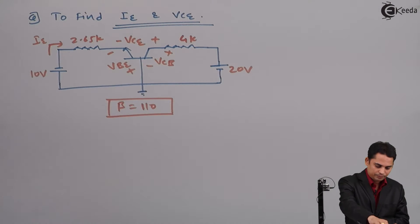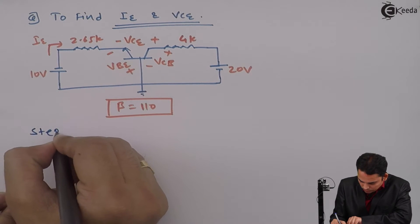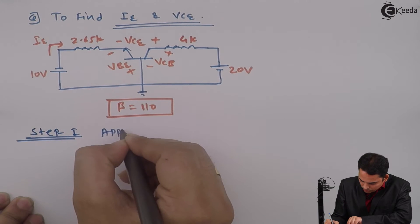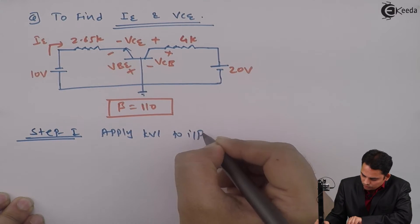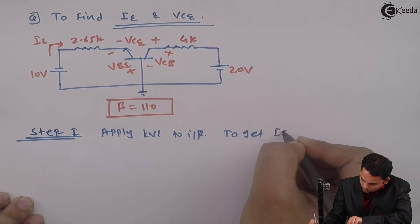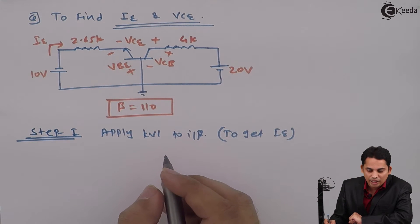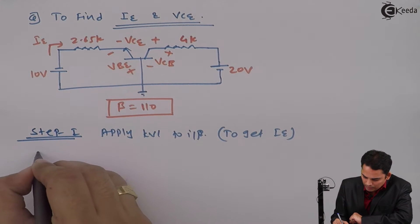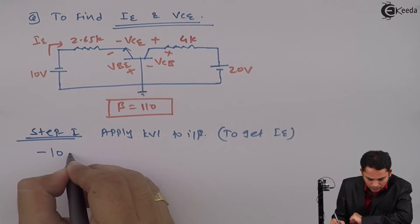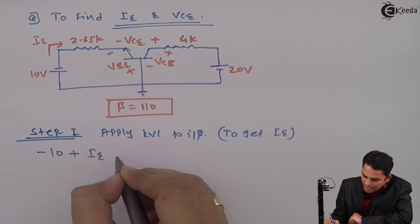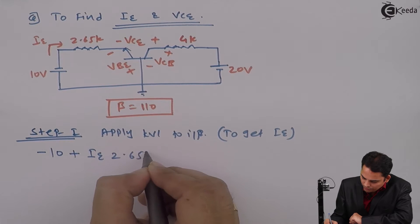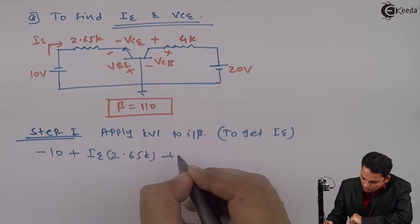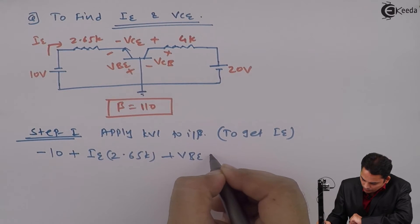So step one is to apply KVL to input. If I apply KVL, the equation will become minus 10 volts plus IE into 2.65K plus VBE is equal to 0.